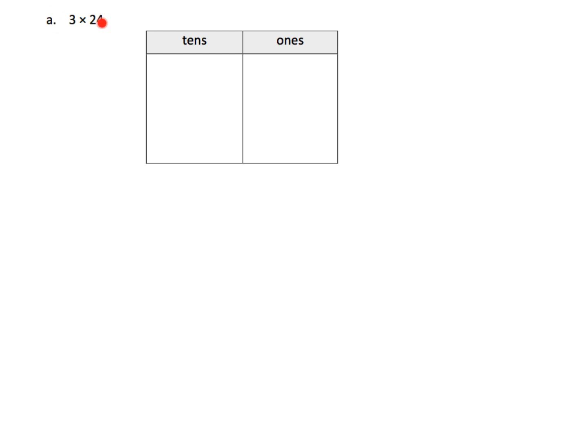We're going to take 3 times 24 and solve it in two different ways: once using the place value chart, and at the same time showing what it looks like using the standard algorithm. The first thing we're going to do is model 24. So 24 is going to look like two tens and four ones.